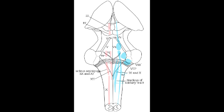What is the function of the dorsal motor nucleus? The function of the dorsal motor nucleus is to send autonomic parasympathetic fibers to the heart, lungs, and the upper GI.